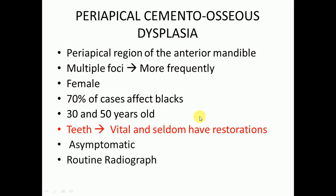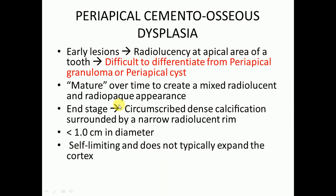Periapical cemento-osseous dysplasia is most commonly present at the anterior part of the mandible at the periapical region of teeth. Multiple foci are more frequently present. It is most common in females, and 70% of cases affect blacks. Patients aged 30 to 50 years are most commonly affected. A very characteristic feature is that the involved teeth are vital and seldom have restorations. Most cases are asymptomatic, diagnosed on routine radiographic examination.